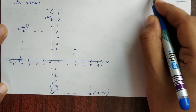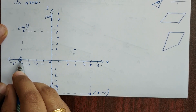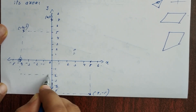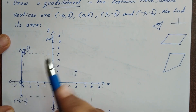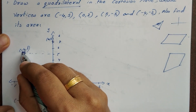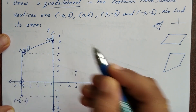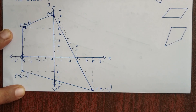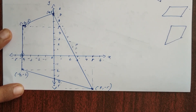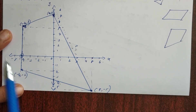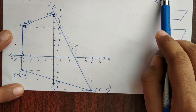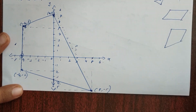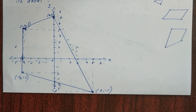Now this is minus four, minus two. So minus four, minus two. I have four points now. I have to join these four points, then they will be joined to form the quadrilateral.